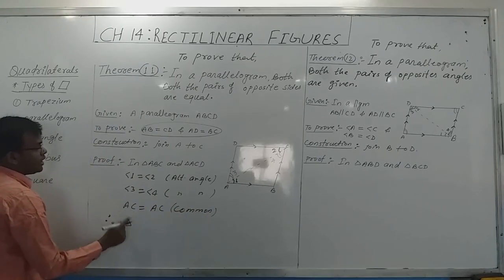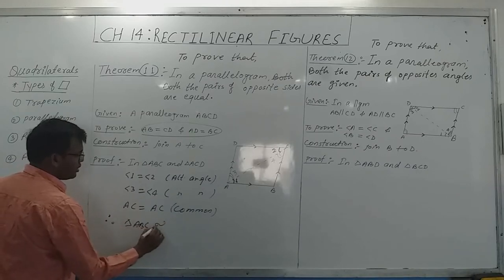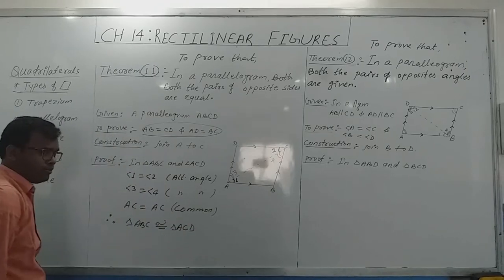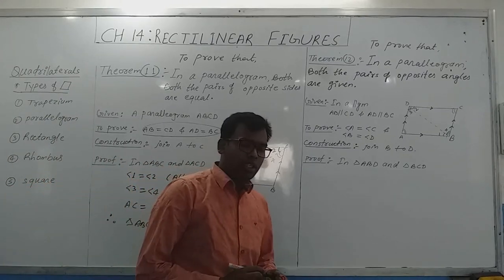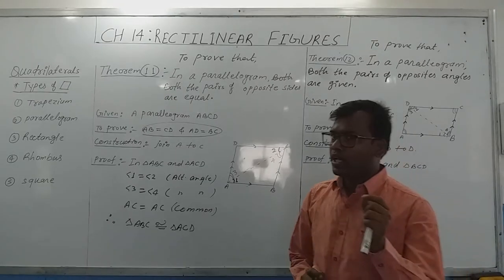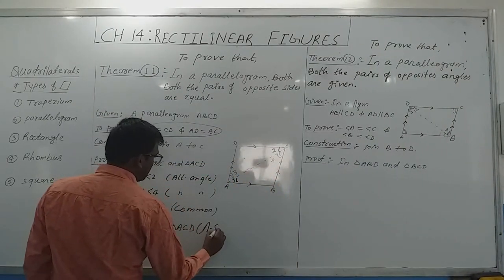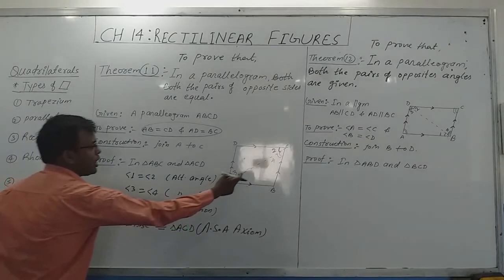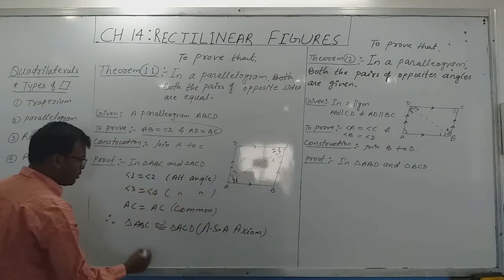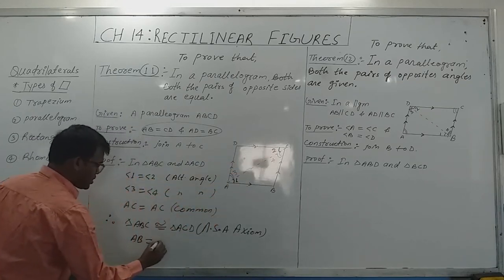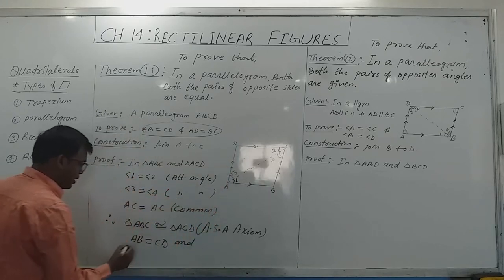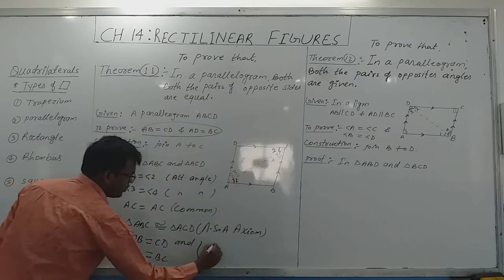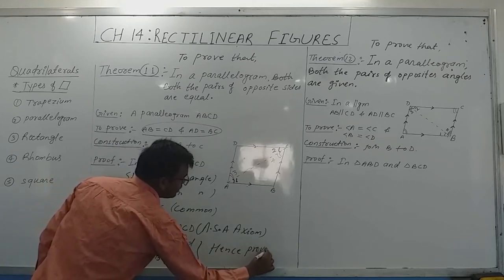And AC is equal to AC, which is common. Therefore, triangle ABC is congruent to triangle ACD. By which property? Since we have two angles and one side, this is by the ASA property. Therefore, if these two triangles are congruent, opposite sides will be equal: AB equals CD and AD equals BC. Hence proved.